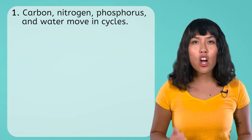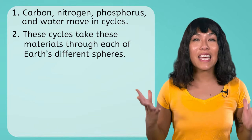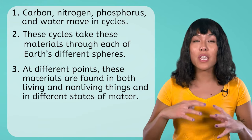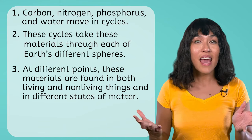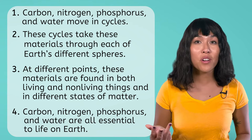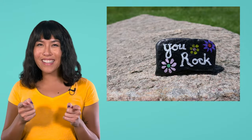So let's recap what we've learned today. You now know that carbon, nitrogen, phosphorus, and water move in cycles. These cycles take these materials through each of Earth's different spheres. At different points, these materials are found in both living and non-living things, and in different states of matter. And carbon, nitrogen, phosphorus, and water are all essential to life on Earth. Be sure to check out the engaging games and thought-provoking extension activities to get ready for our next lesson. And in the meantime, remember — in Earth science, as in life, you rock! See you next time!